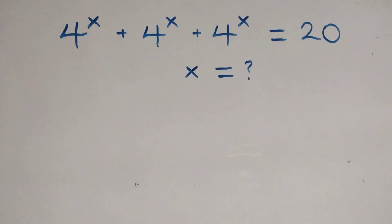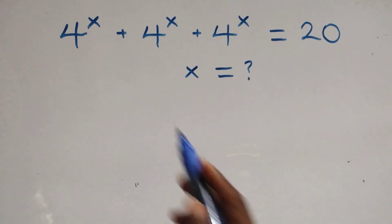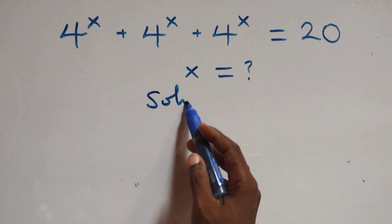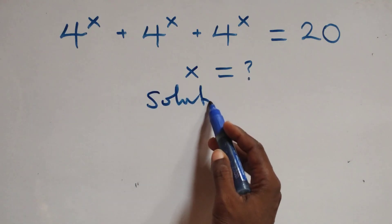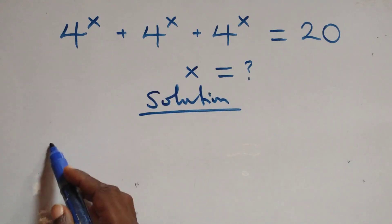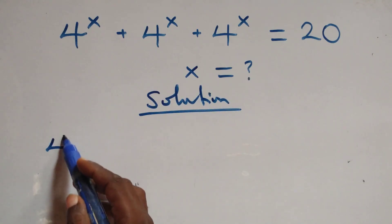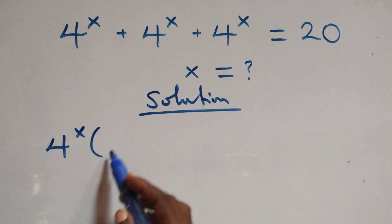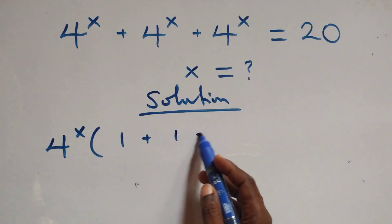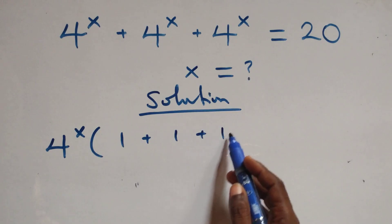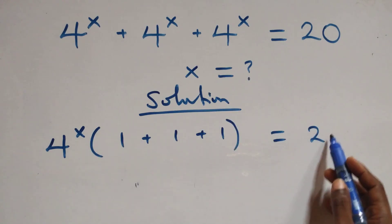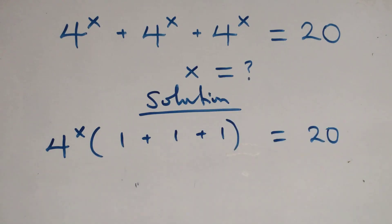Hello, welcome. How to solve this nice exponential equation. From here, what we have is we factor 4 raised to power x out. We have 4 raised to power x into brackets, 1 plus 1 plus 1, and this equals to 20 on this side.